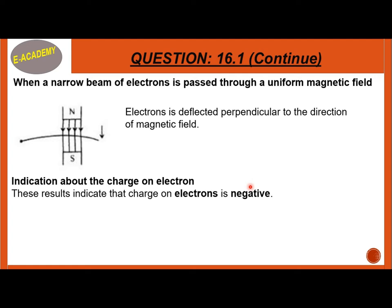In the electric field, the electron — being negative — is attracted towards the positive plate. In the magnetic field, the electron is deflected towards the South Pole, which is considered positive.